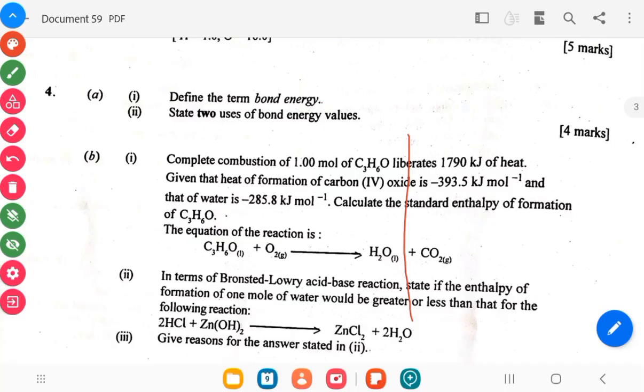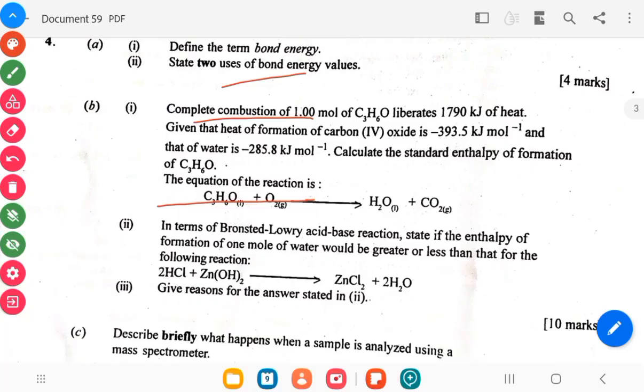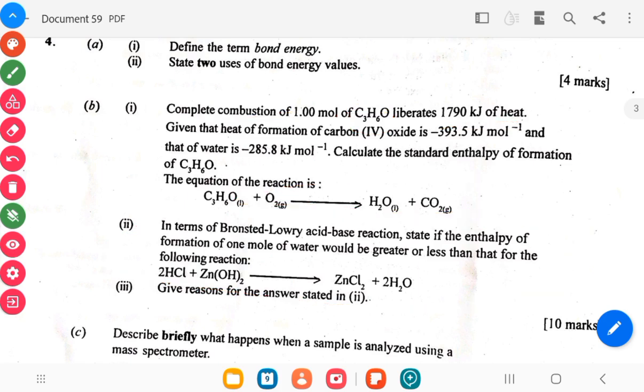Question 4a: What is bond energy? State two uses of bond energy values. By looking at the B, it says complete combustion of 1 mole of C2H2O liberates 1790 kJ of heat. So we have enthalpy change here which is the topic mentioned. And we also have acid and base here again.